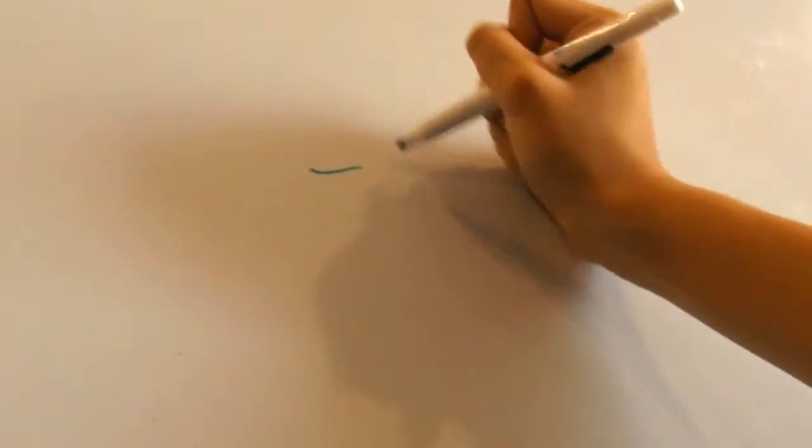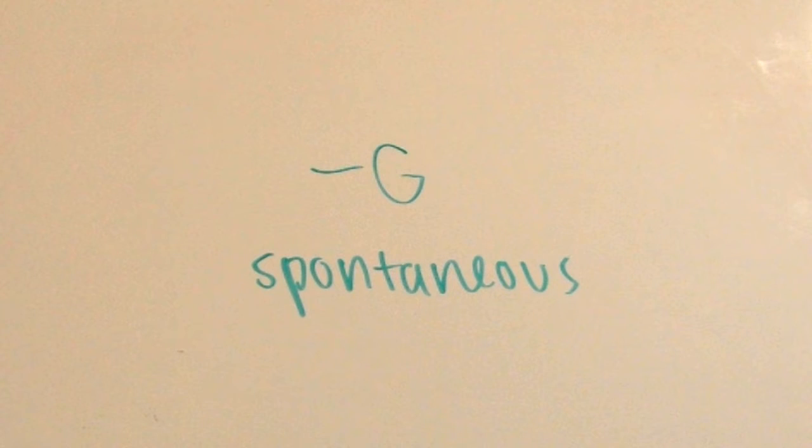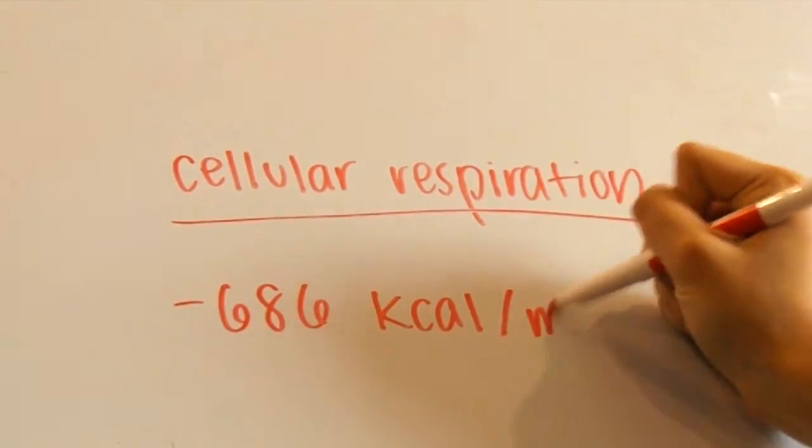One of the most important things that you need to know is that when delta G is negative or the free energy change is negative, the reaction is spontaneous, like in cellular respiration since its free energy is negative 686 kilocalories per mole.